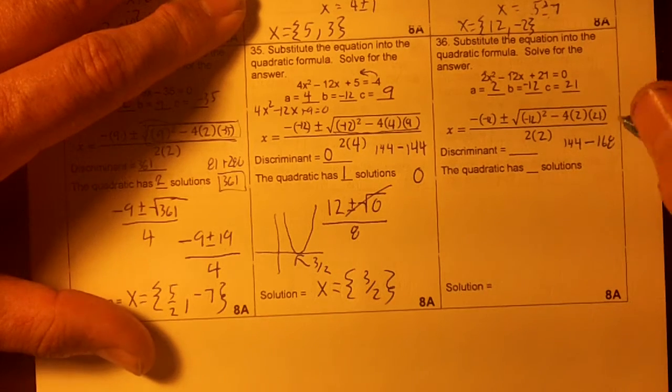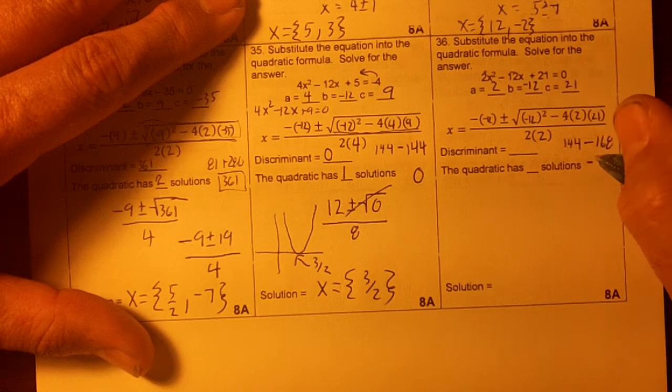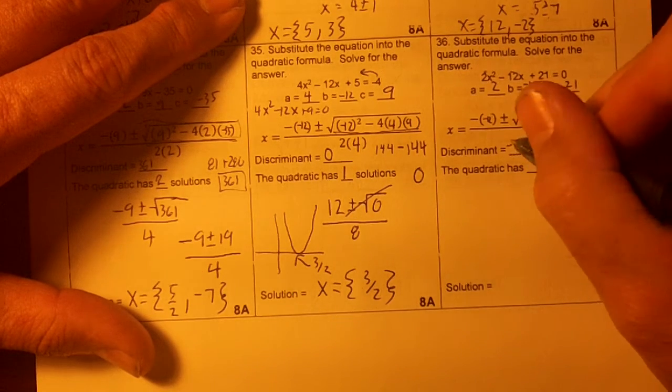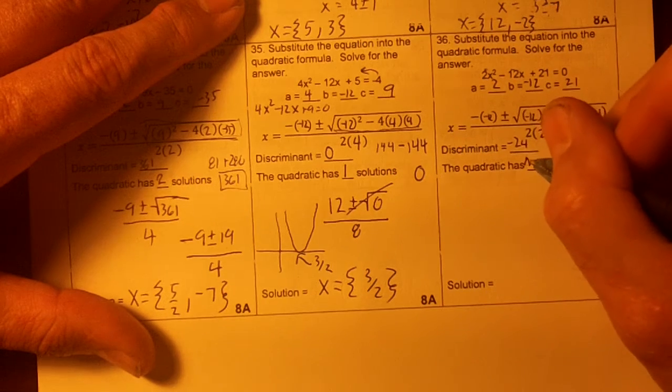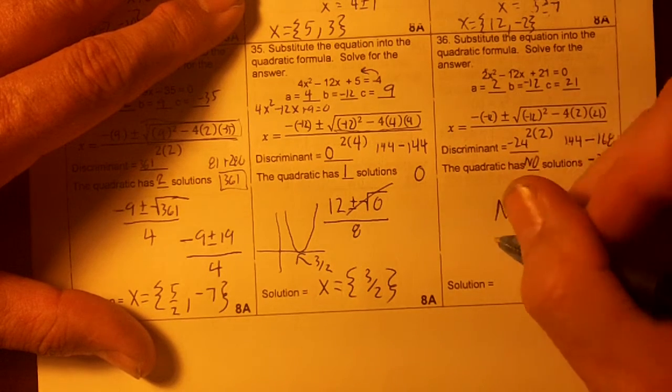I'm right, it's 168. Notice that when we subtract, we're going to get a negative 24. Since the discriminant is negative 24, there are no solutions.